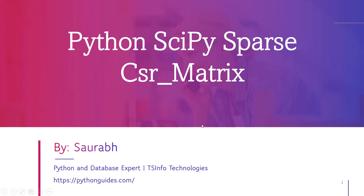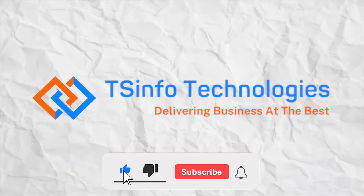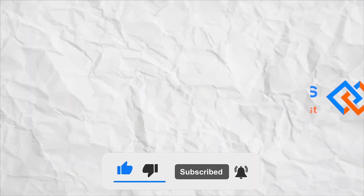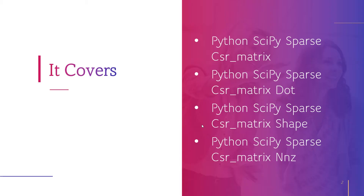Let's see what we are going to cover in this video. First we will know about Python SciPy Sparse CSR matrix, then CSR matrix dot, after this CSR matrix shape, and at the end we will know about Python SciPy Sparse CSR matrix NNZ, which stands for non-zero element.